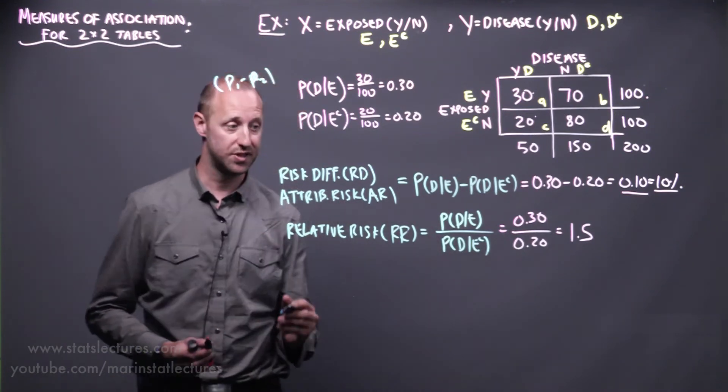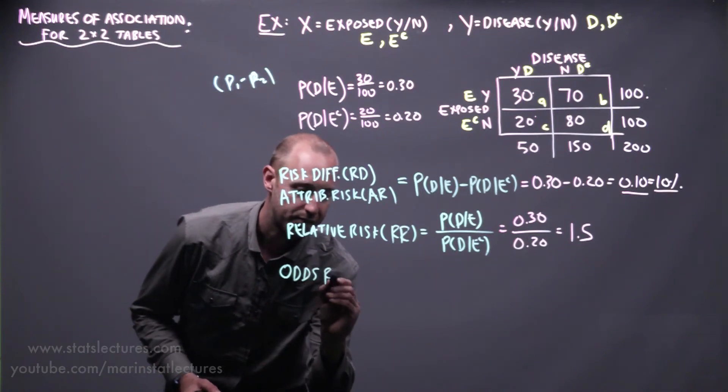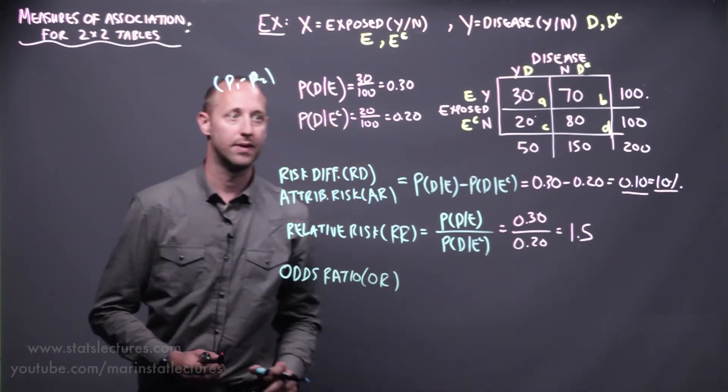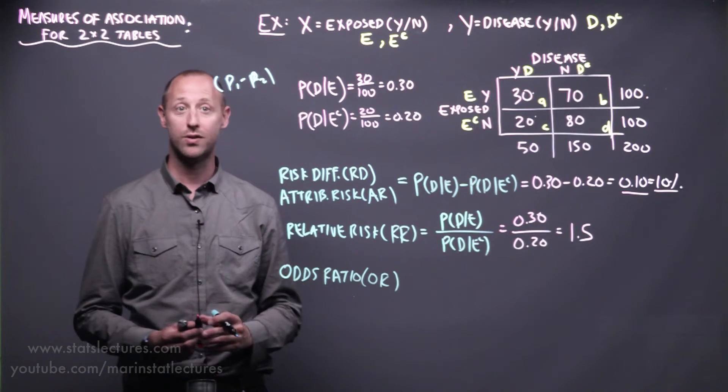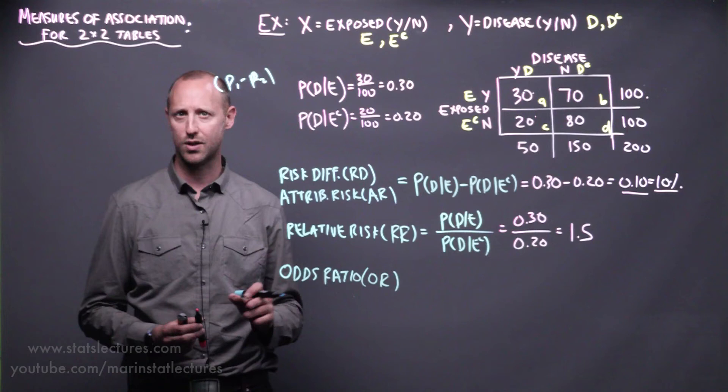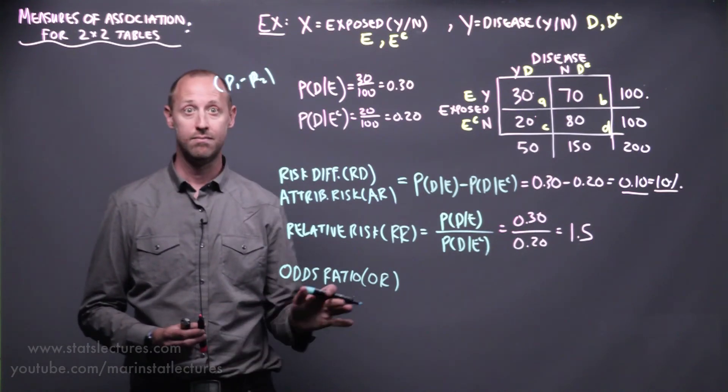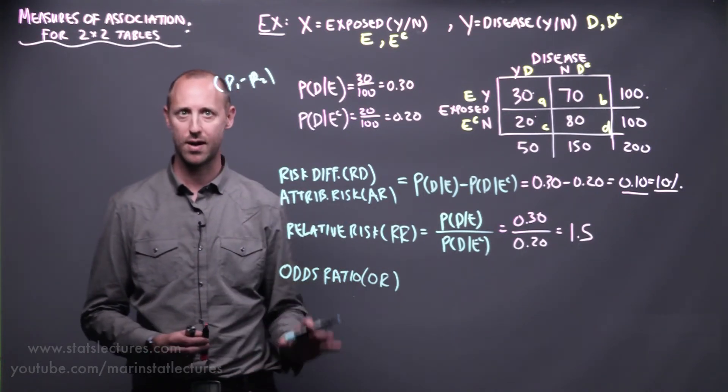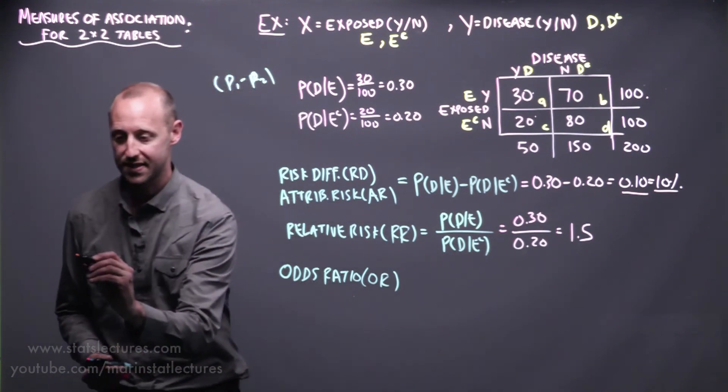The final measure for us to discuss is something called the odds ratio, abbreviated OR. And in a separate video, we'll talk about why we might want to calculate an odds ratio, why we might want to estimate this. The quick version now is in a case control type design, we can't estimate the prevalence or the incidence, and this is kind of a workaround, but we'll discuss that separately.